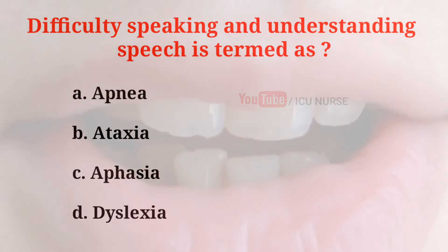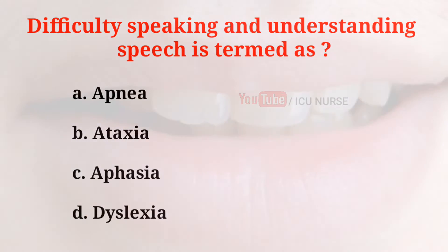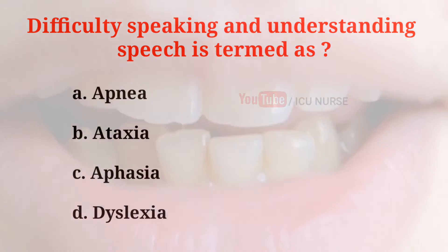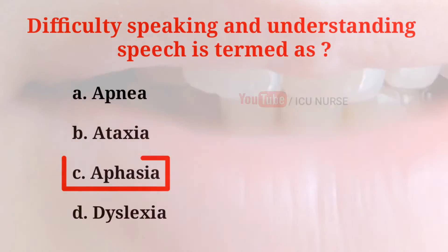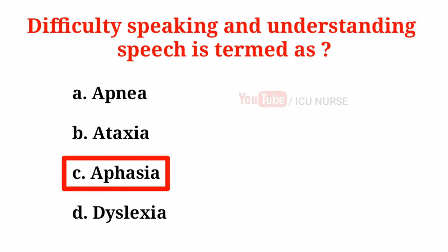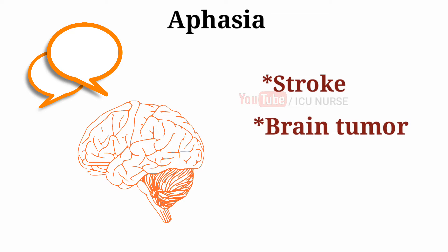Difficulty speaking and understanding speech is termed as: A. Apnea, B. Ataxia, C. Aphasia, D. Dyslexia. The correct answer is C. Aphasia. Aphasia results from damage to the portion of the brain involved in creating and interpreting language. Aphasia is not a disease; it is a symptom of a neurological disorder or injury such as stroke, brain tumor, or head injury.